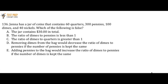Jenna has a jar of coins that contains 60 quarters, 300 pennies, 100 dimes, and 40 nickels. Which of the following is false? A: the jar contains $30 in total. B: the ratio of dimes to pennies is less than 1. C: the ratio of dimes to quarters is greater than 1. D: removing dimes from the bag would decrease the ratio of dimes to pennies if the number of pennies is kept the same. E: adding pennies to the bag would increase the ratio of dimes to pennies if the number of dimes is kept the same. Pause the video if you'd like — don't worry if you have trouble with this question because it is a hard question.